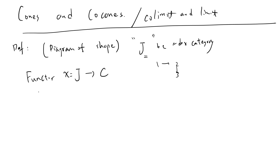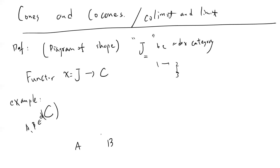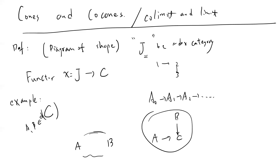Let's do an example. Suppose you have objects A and B in category C, and you pick those two objects with no arrows between them — that's one type of diagram. If you have an index from a zero to a one and keep going, this is also a diagram. If you have A, B, C connected, this is also a diagram. So any type of diagram can be viewed as an index category and a functor. You can view this as some special type of diagram.